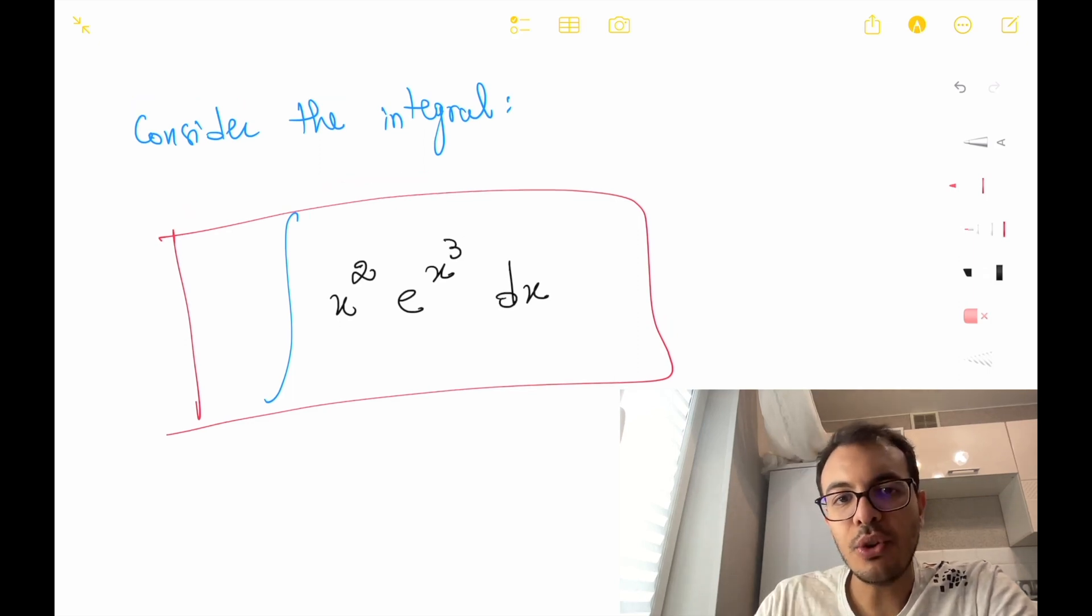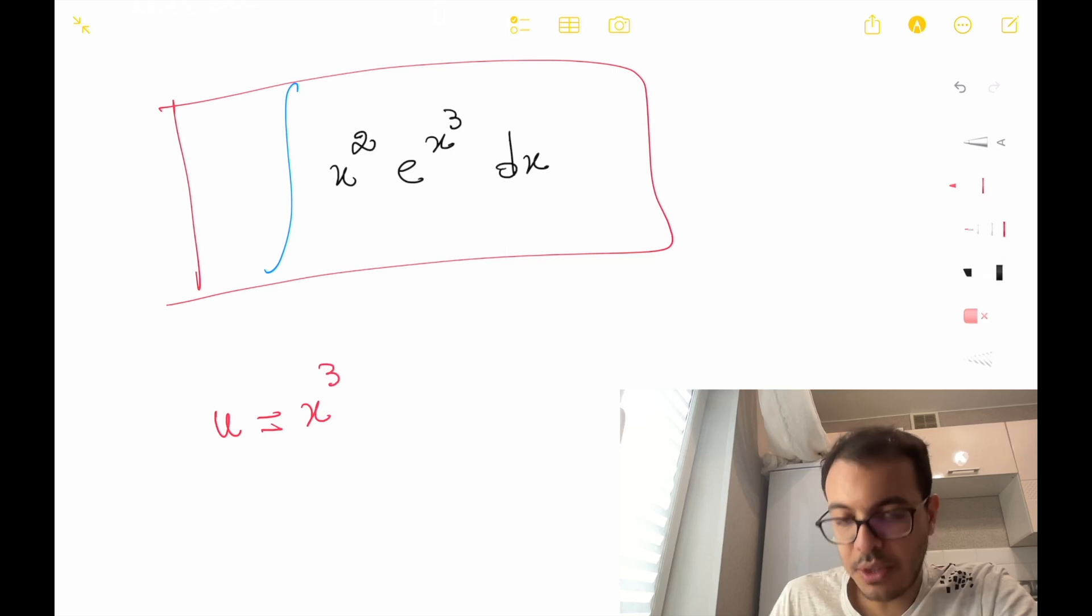To apply the change of variables, we choose u to be x cubed. So u equals x cubed. Now, let's find du and rewrite the integral in terms of u.